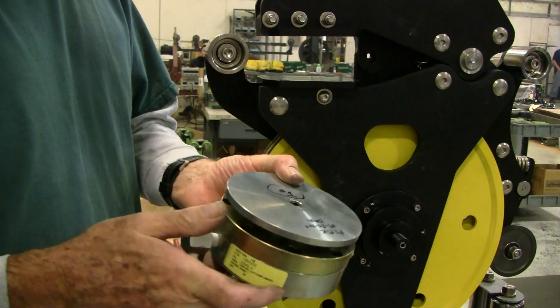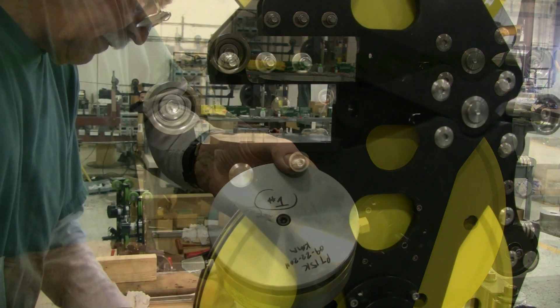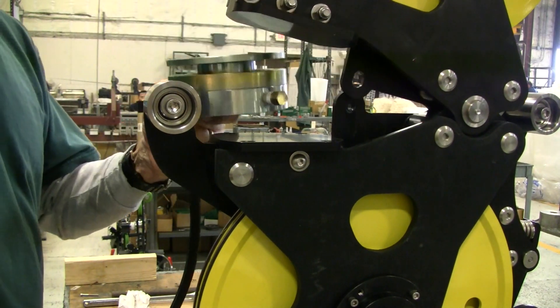A load cell is a hydraulically actuated, self-contained tension measuring device. Place the new load cell on the mounting plate as shown.